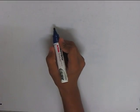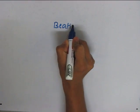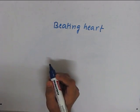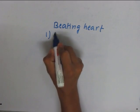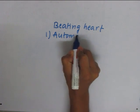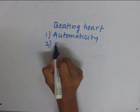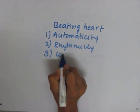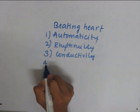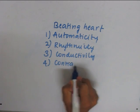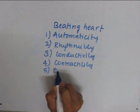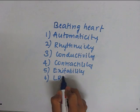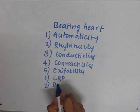The first part is about the beating heart. I will first list the number of properties, then explain some of the important ones. The first is automaticity, second is rhythmicity, third is conductivity, fourth is contractility, fifth is excitability, sixth is long refractory period, and the seventh one is distensibility.